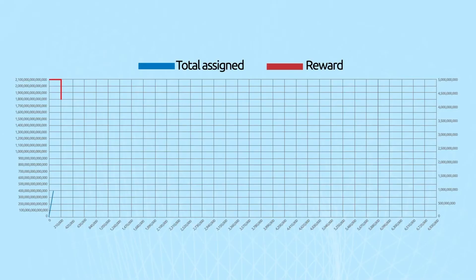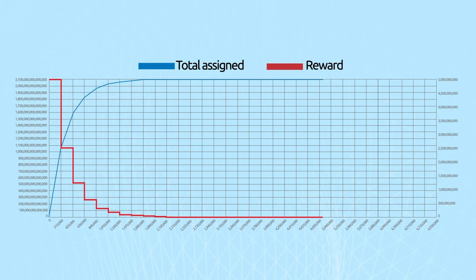The subsidy release rate, which was codified into the first ever version of the Bitcoin client, began by issuing five billion satoshis per block beginning with the genesis block, and drops by half every 210,000 blocks.